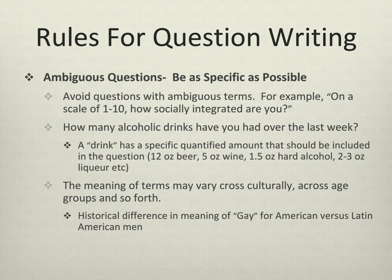Ambiguous questions should be avoided. You want to be as specific as possible when you ask a question. For example, asking 'on a scale of 1 to 10, how socially integrated are you?' is an impossible question to answer — what is social integration? Even something like 'how many alcoholic drinks have you had over the last week' is too ambiguous. A drink is a specified amount and that should be included in the question.